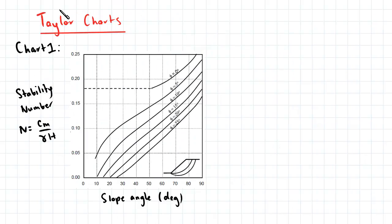So here we have the first Taylor chart. On the horizontal axis we have the slope angle and on the vertical axis we have the stability number.